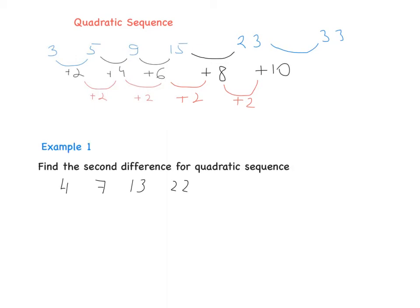Then 23 plus 10 is 33. Now we have example number one: find the second difference of the quadratic sequence 4, 7, 13, 22. We need to start with the first difference.